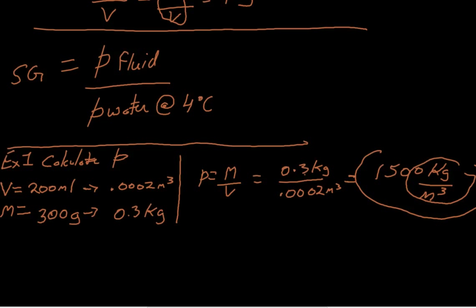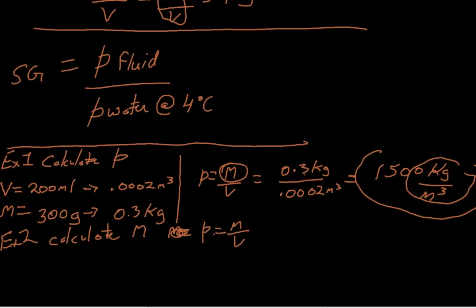Example number two: we're asked to calculate mass. The first thing to do is rearrange the equation so mass is on one side. Starting from density equals mass over volume, multiply both sides by volume. The volume cancels on the right side, giving us mass equals density times volume.